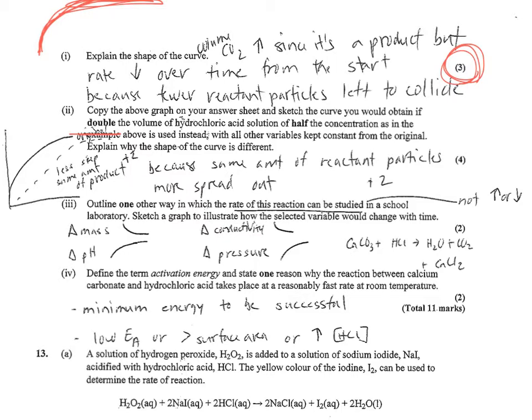Number three, outline one other way and sketch a graph. Sketch a graph means you don't need any labeled axes. Any one of these would have been fine. You could measure the change in mass, that would be a downward exponential slope, a decrease in mass. You could look at change in pH or concentration using pH. In this case, it would increase as H+ is converted to water. Conductivity would decrease as the total number of ions decreases. Pressure would increase because of production of gas. Any of those would have been good.